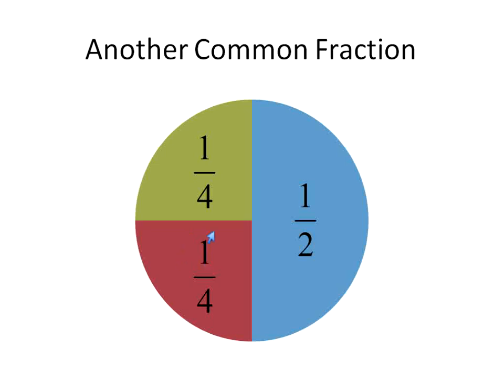Again, just meaning that this is one piece. If you were to divide this circle into four equal pieces, that would be one of them. This is another one. And then this over here is the one half that we talked about earlier.